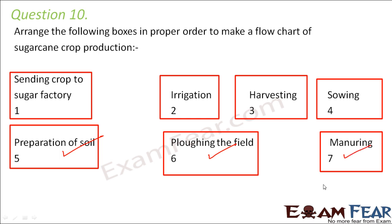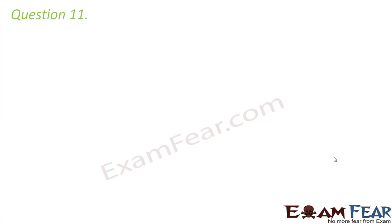After manuring, we sow the seeds — that is, we scatter the seeds. Once seeds are sown, we irrigate the field. After irrigation, the crops gradually mature and then harvesting takes place — the crops are cut. Then threshing is done, separating grains from the straw, and after that the crop is sent to the sugar factory. Note that sometimes manuring may follow plowing or may come before sowing.